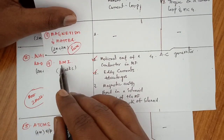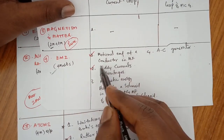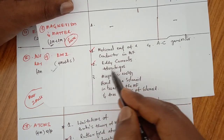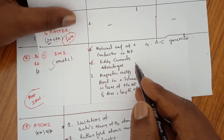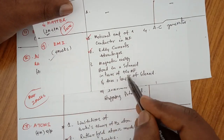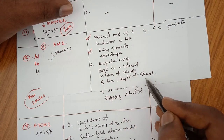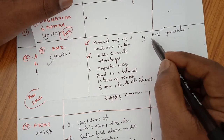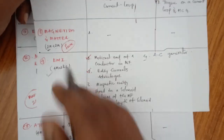Chapter 9 is Electromagnetic Induction (EMI) — only for 4 marks questions. The important questions are: motional EMF of a conductor in a magnetic field; eddy currents and their advantages — what are eddy currents, write their advantages; magnetic energy stored in a solenoid in terms of the magnetic field, area, and length; and explain the working of the AC generator. These 4 questions are very important from Chapter 9.